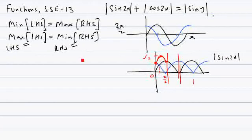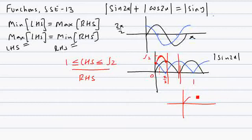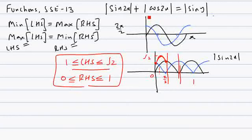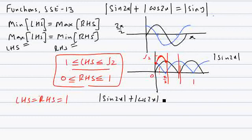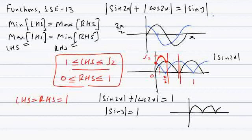Summing up: |sin 2x| + |cos 2x| on the left hand side lies between 1 and √2. The right hand side is |sin y|, and since sin y lies between −1 and 1, taking the mod gives |sin y| between 0 and 1. For the two sides to be equal, the only case is when left hand side equals right hand side equals 1. So we get two equations: |sin 2x| + |cos 2x| = 1 and |sin y| = 1.